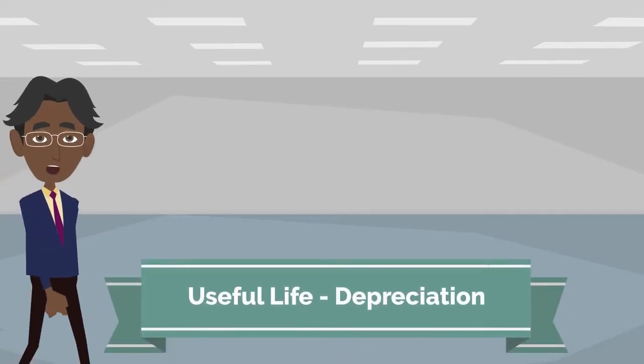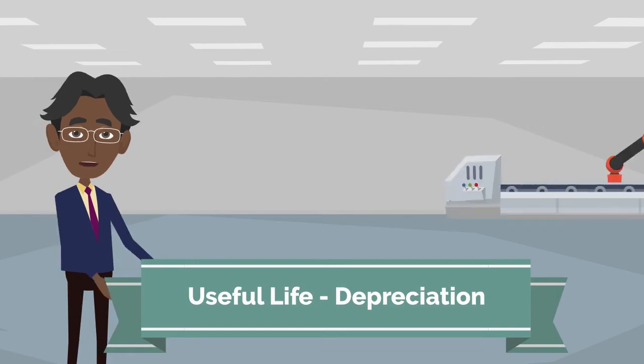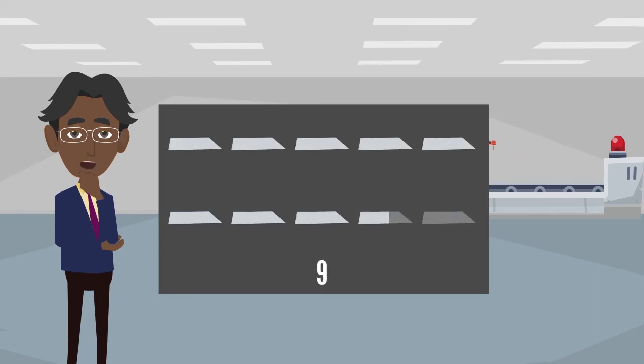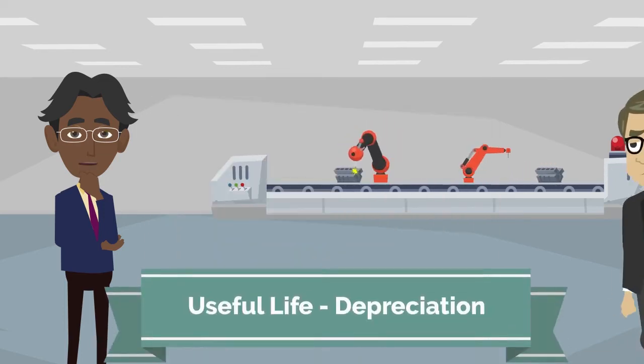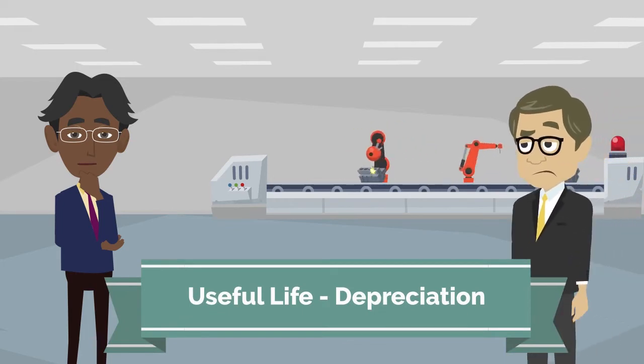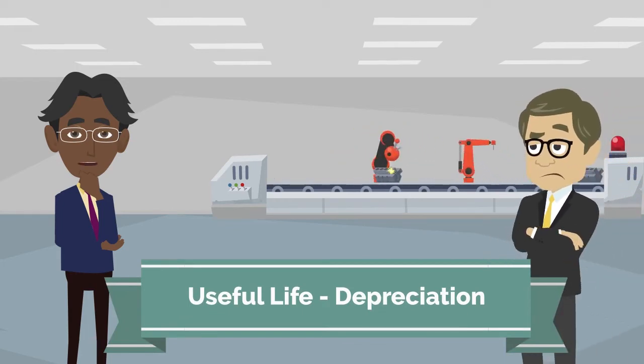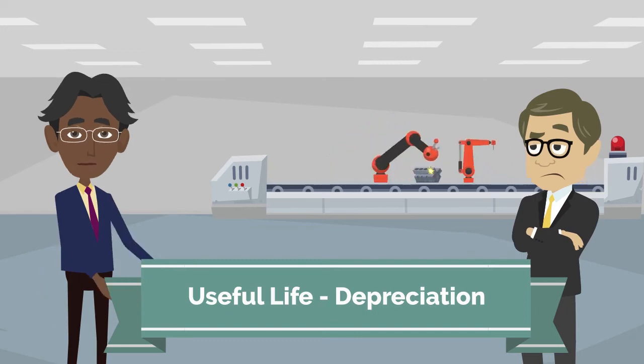Assets get worn out over their useful life. Imagine we have a machine that cuts pieces of metal into shape. When brand new, it can cut 10 sheets of metal at once. However, after some use, the blade gets worn down and it can only cut 6 sheets of metal at once. The machine is now less useful to the company, and not able to bring the same benefit it once did.